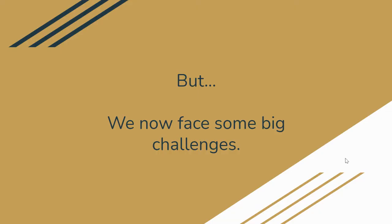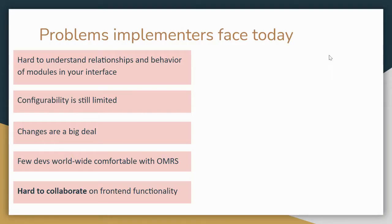We now face some big challenges because of this. Here are some example problems that implementers face today: it's hard to understand the relationships and behavior of the different modules that impact your user interface.